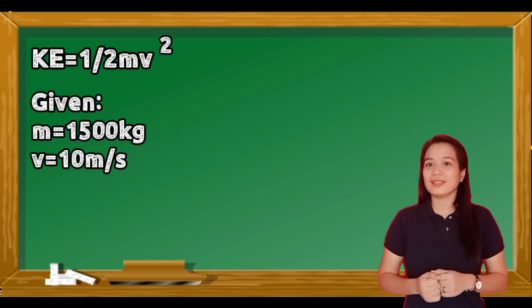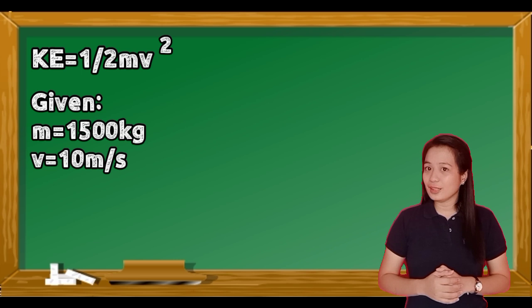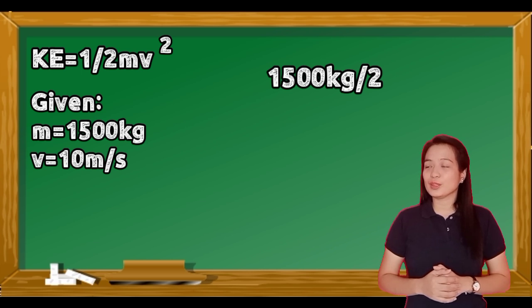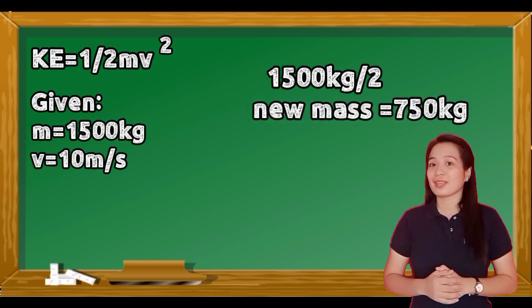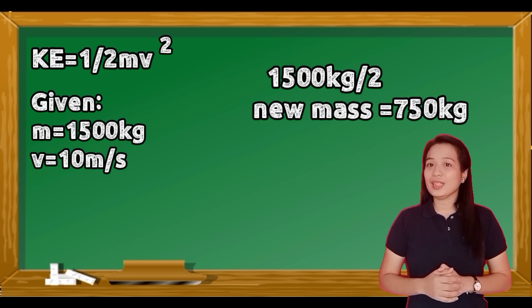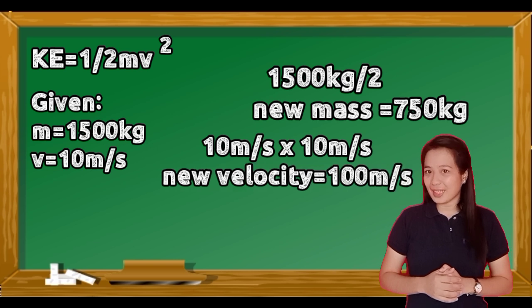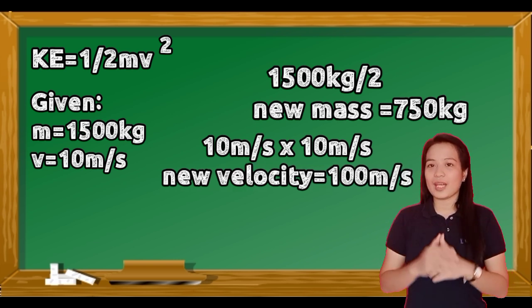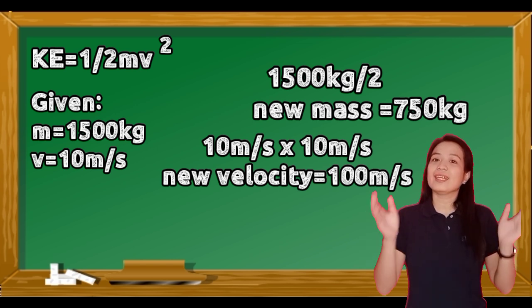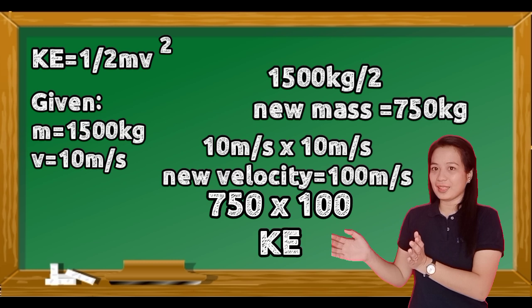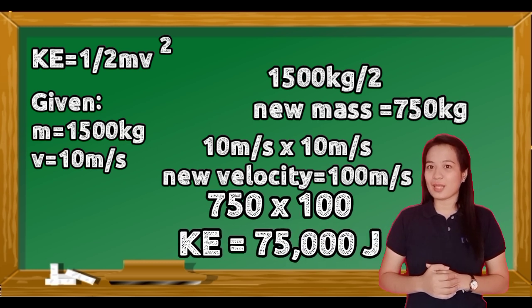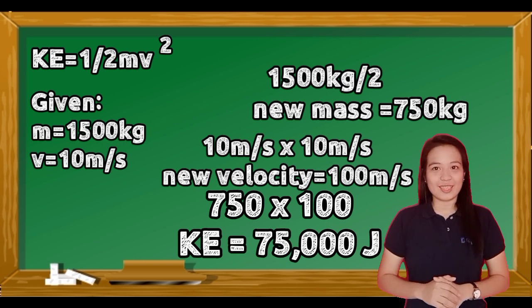Now that we've identified the given values, let's calculate the kinetic energy. First, we find one half of the mass: one half of 1500 is 750 kilograms. Next, we square the velocity: 10 times 10 equals 100. Then we multiply 750 kilograms by 100, and the answer is 75,000 joules. That is the kinetic energy of the car.